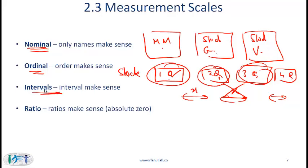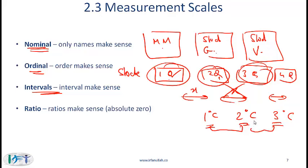With the interval scale, not only do we have order but the interval also makes sense. The classic example is temperature. If you have temperatures of one, two, and three degrees centigrade, we know three is hotter than two, two is hotter than one, and the difference between them is equal — a one-degree difference throughout. However, ratios don't make sense here: we cannot say that two degrees centigrade is twice as hot as one degree centigrade.